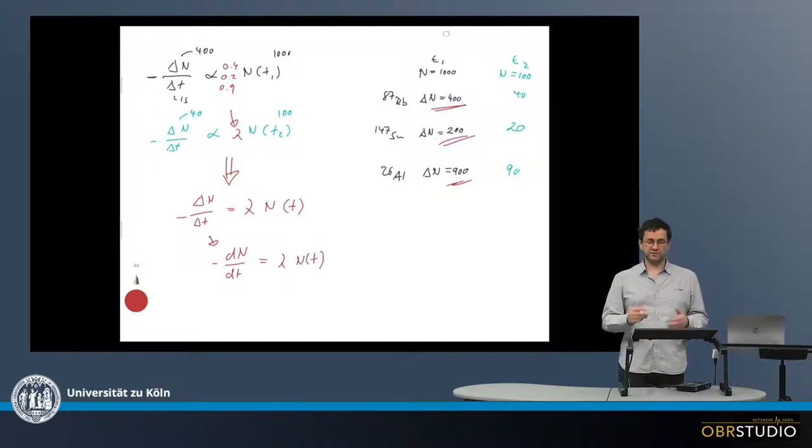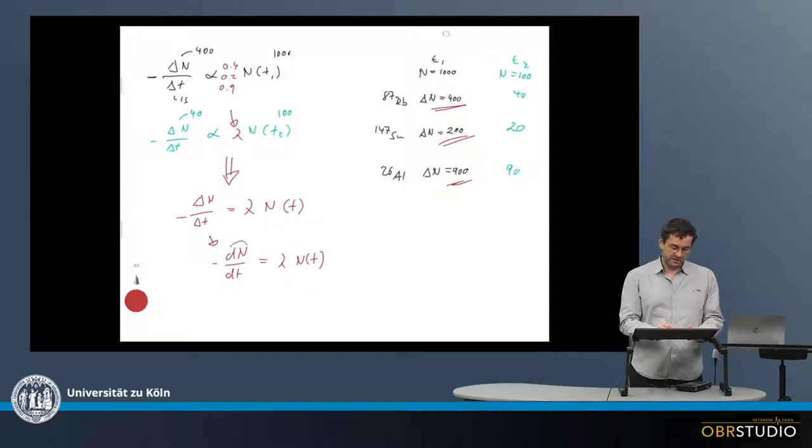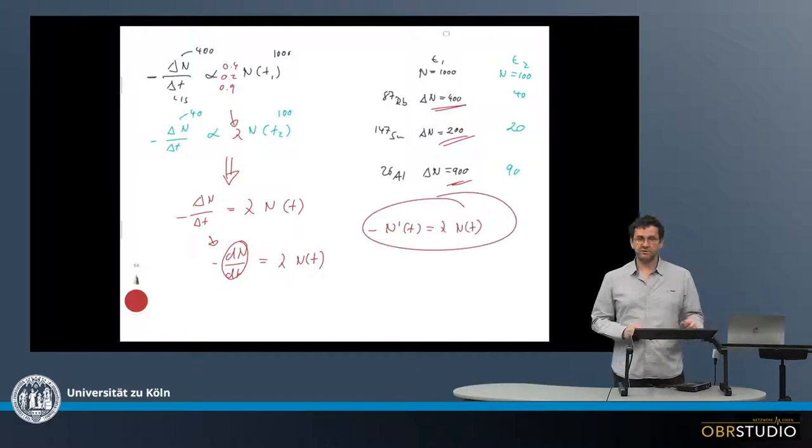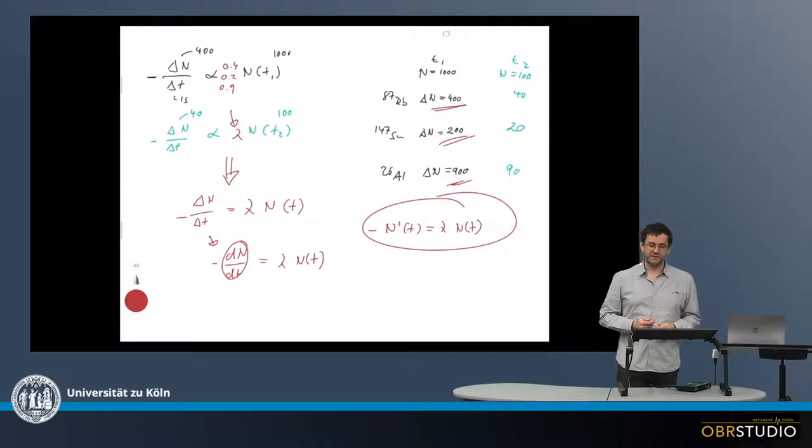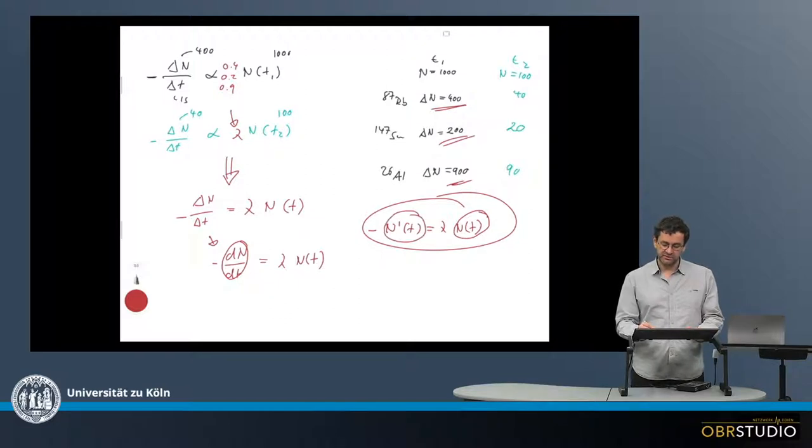And what we then see here, if we rewrite this a little bit, if we write this as a derivative, then this means this is minus n prime of t equals lambda n of t. Now this is a first decay equation here, and we can see it's a differential equation, because we have here a function, and here we have the derivative of this function here.